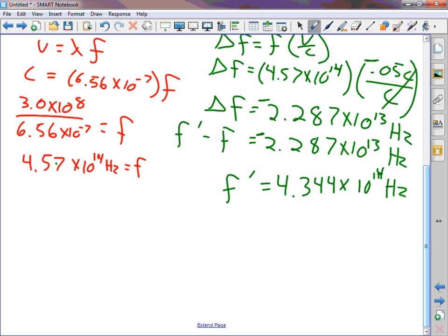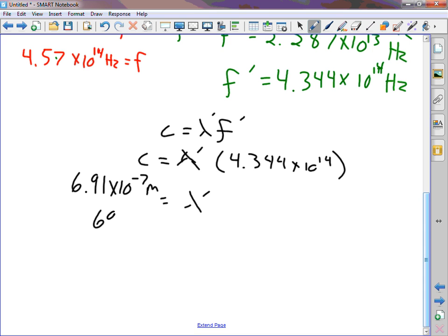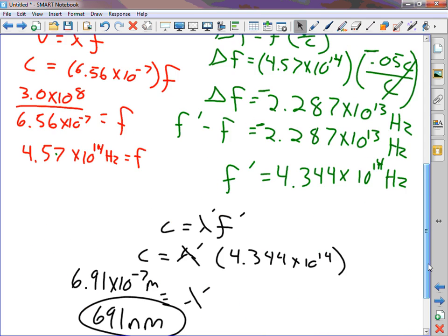Cool. How do we get from, I'm looking for the wavelength that I'm going to see. The exact same way we got there the first time. c equals lambda f. c equals lambda prime times 4.344 times 10 to the 14th. What wavelength lambda prime do I actually see? 6.91 times 10 to the negative 7th meters or 691 nanometers. I got two sig figs right there, at the 0.05. So this becomes 690 nanometers.